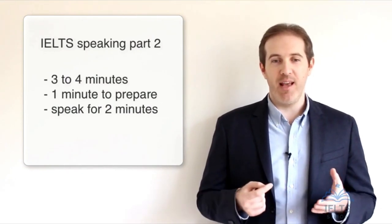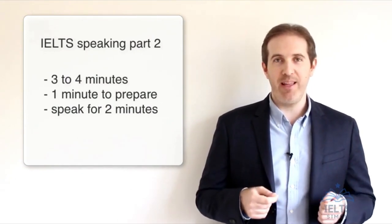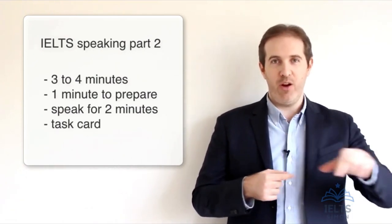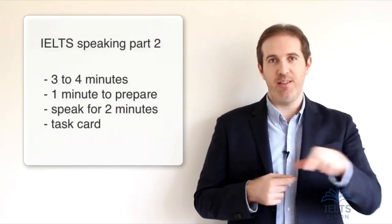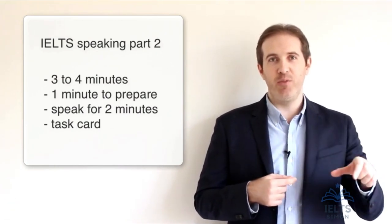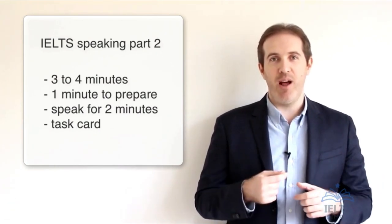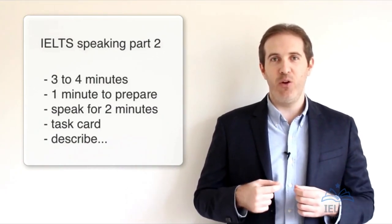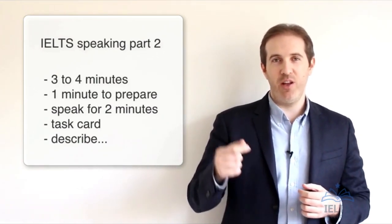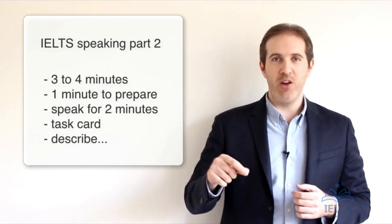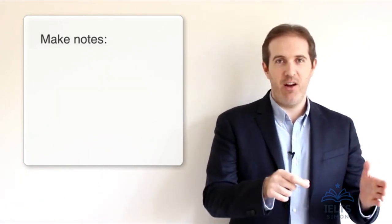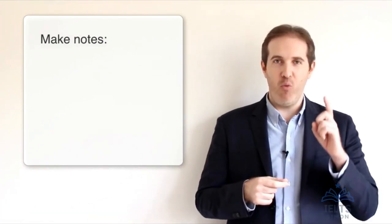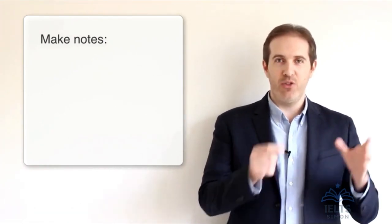What happens then? Well, the examiner starts by giving you a task card — a piece of paper or card with a question written on it. That task always begins with the word 'describe', so you're going to have to describe something. The examiner also gives you a pencil and a piece of paper for making notes. You have your task card and you can make some notes, and the examiner will tell you that you have one minute to make notes on the task.